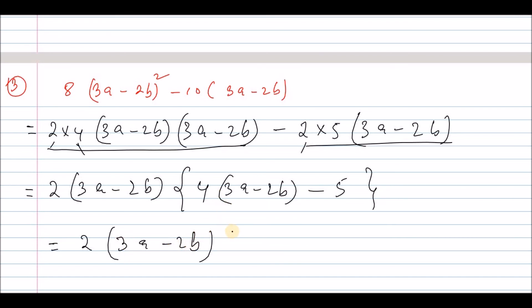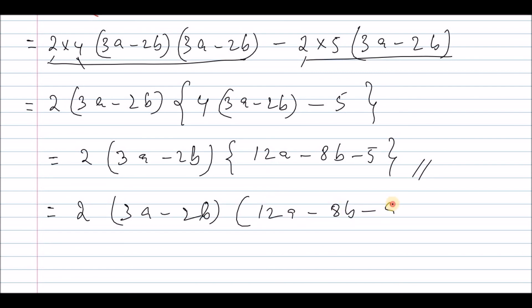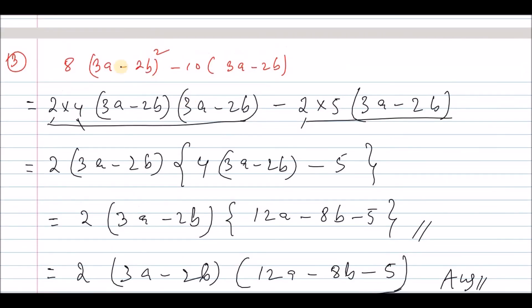This is 3a into 2b. If it is 2a minus 2b — 8 again, minus 8b — then minus 5. The answer: the second bracket is (3a minus 2b), and the first bracket is 2(3a minus 2b). The second bracket is (12a minus 8b minus 5). So the factored answer is (3a minus 2b)(12a minus 8b minus 5).